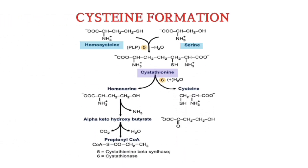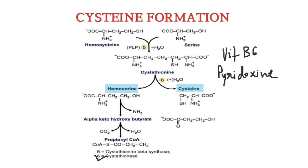The second pathway involves the combination of homocysteine with serine, which forms cystathionine. The enzyme is cystathionine beta synthase. Cystathionine is subsequently broken down into cysteine and homoserine by the enzyme cystathionase. Both of these reactions require vitamin B6, pyridoxine.